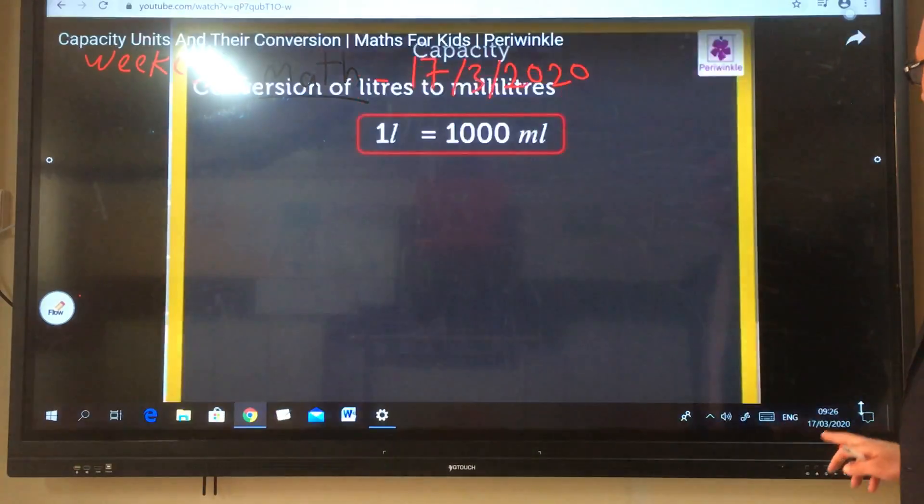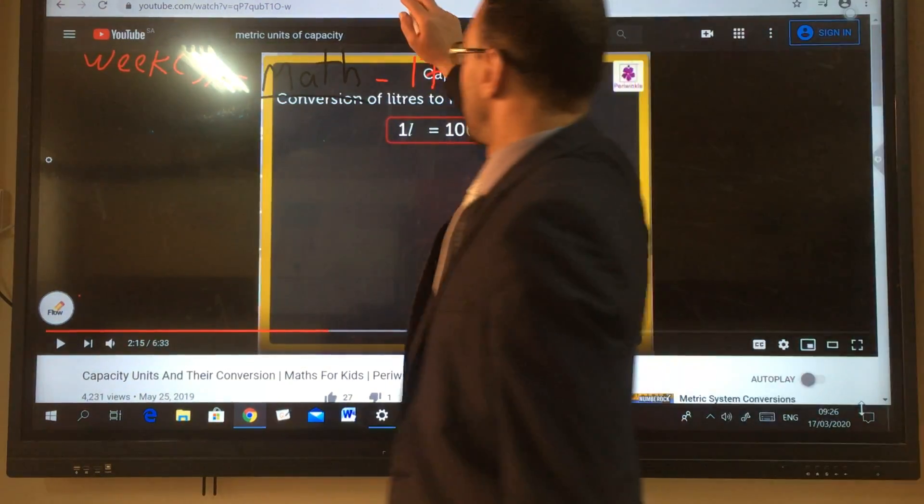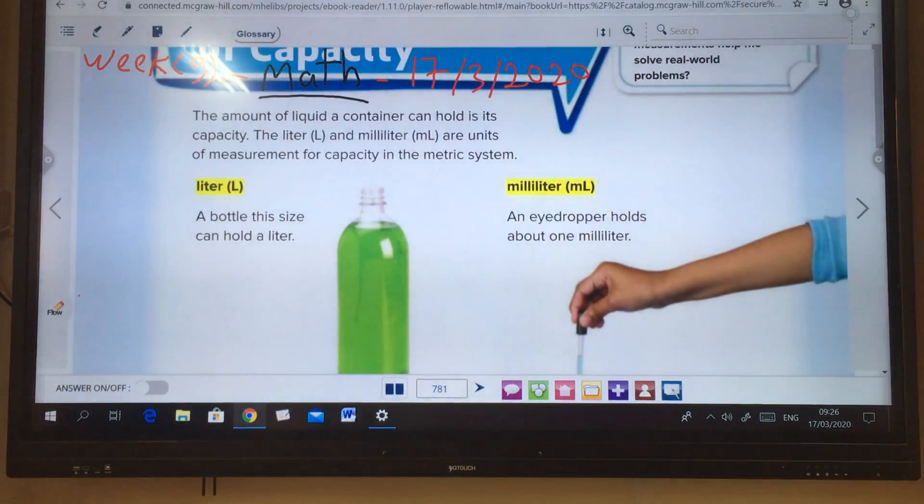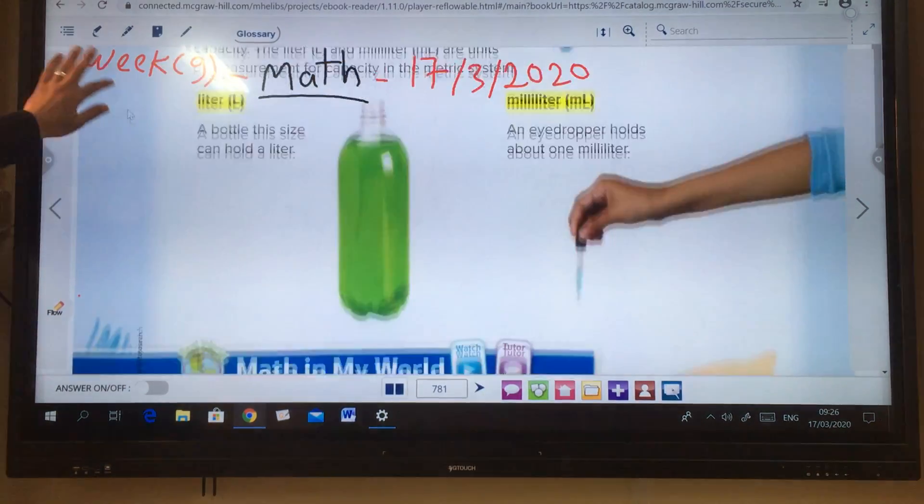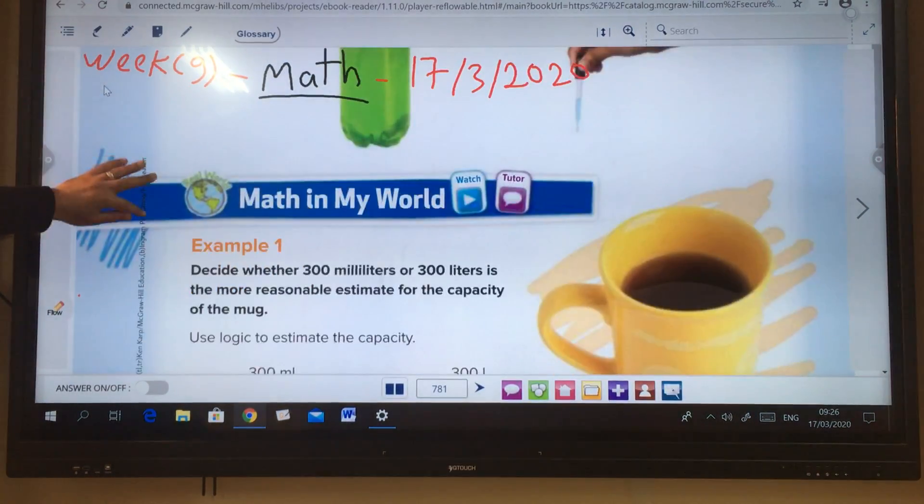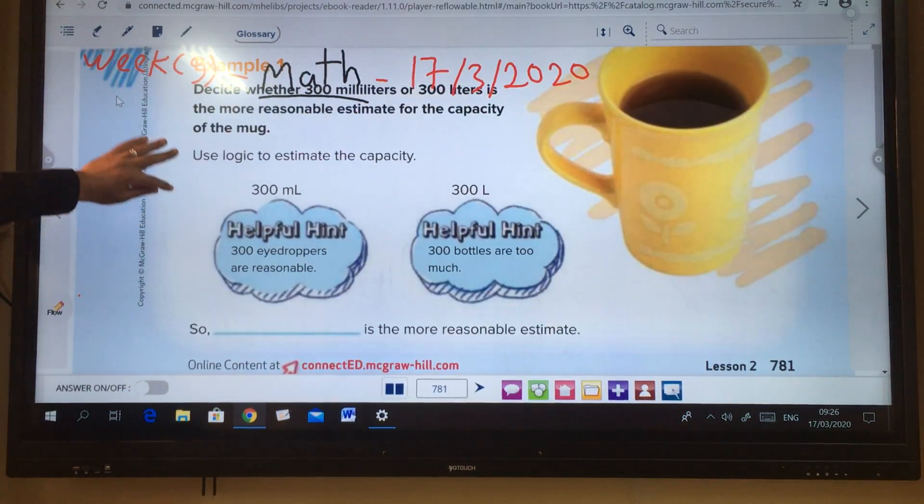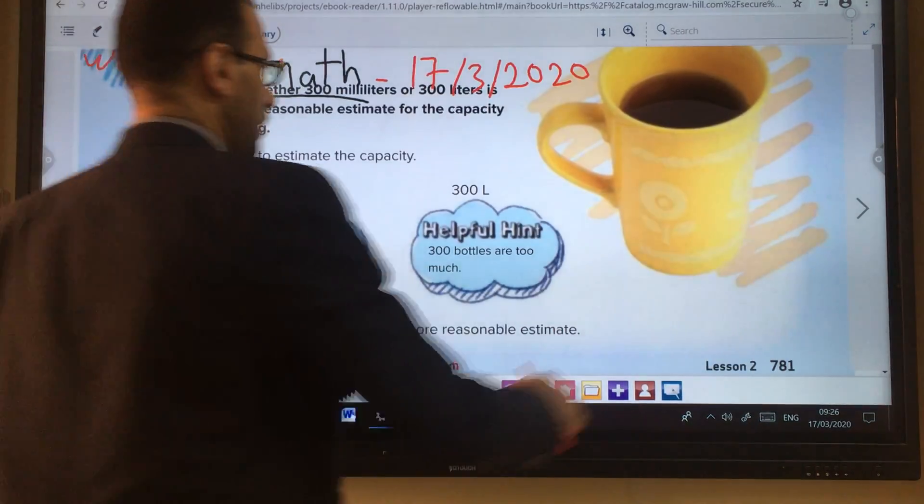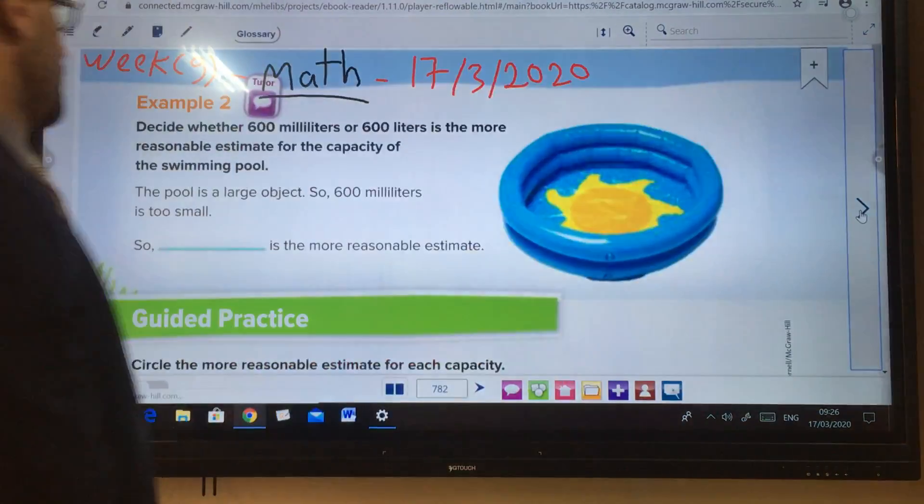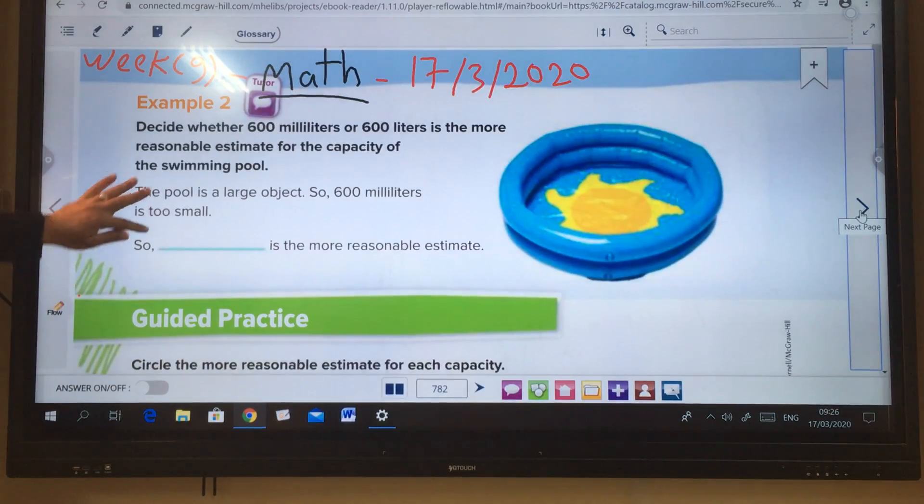As you see here, the units of capacity are only two units: liter and milliliter. Liter for big size and milliliter for small size. Look, now in your book, page number 782. In this guided practice.